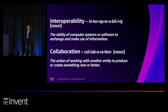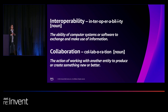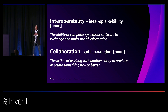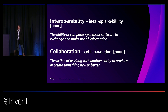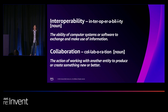Let's begin by defining what I mean when I say data interoperability and collaboration. Interoperability is the ability of computer systems or software to exchange and make use of information. Data collaboration is the action of working with another entity to produce something new or better. Companies across advertising and marketing — whether you are an enterprise brand, a measurement company, a customer data platform, or a media owner — thrive by knowing who their customers are, unifying the data they have, and safely using that data with partners to drive business outcomes.